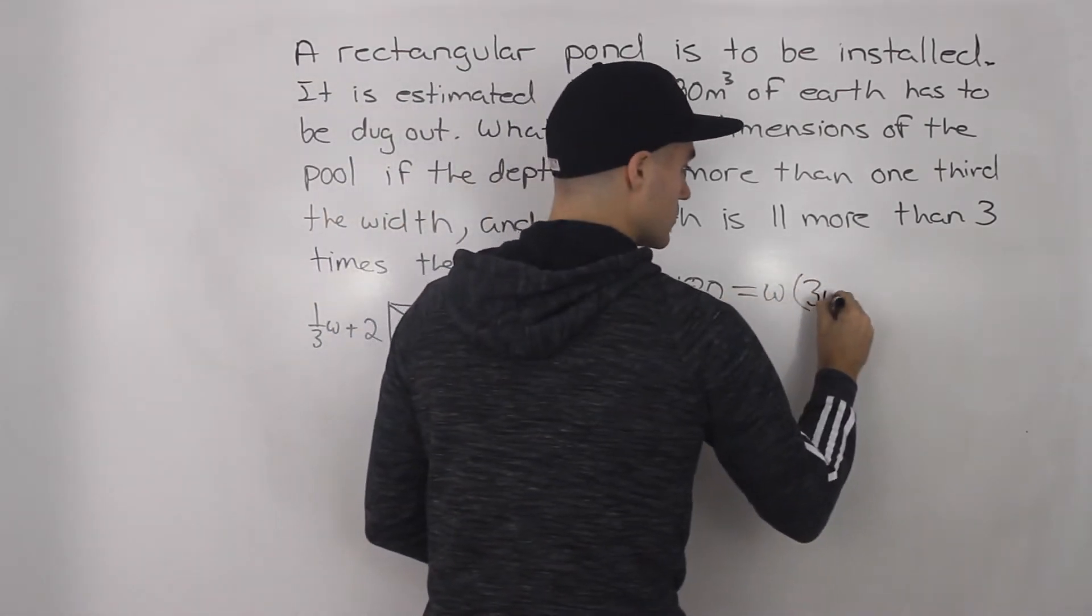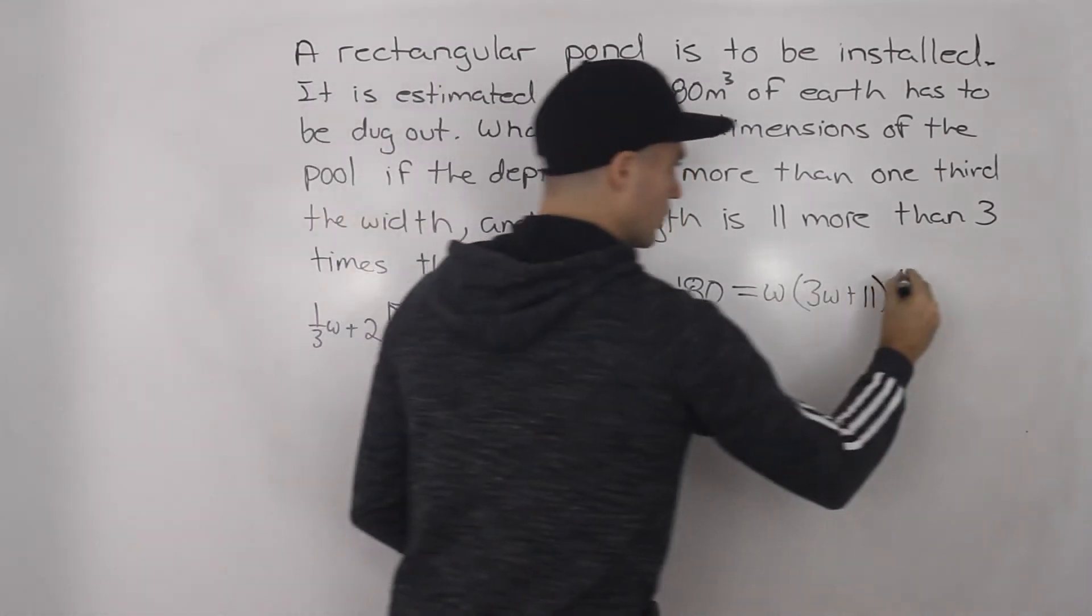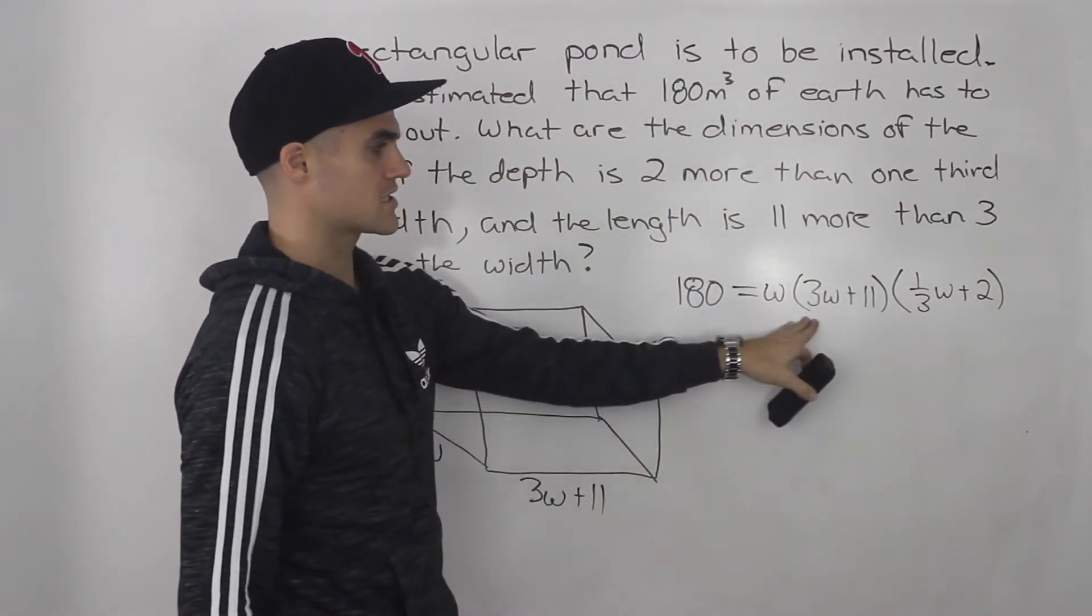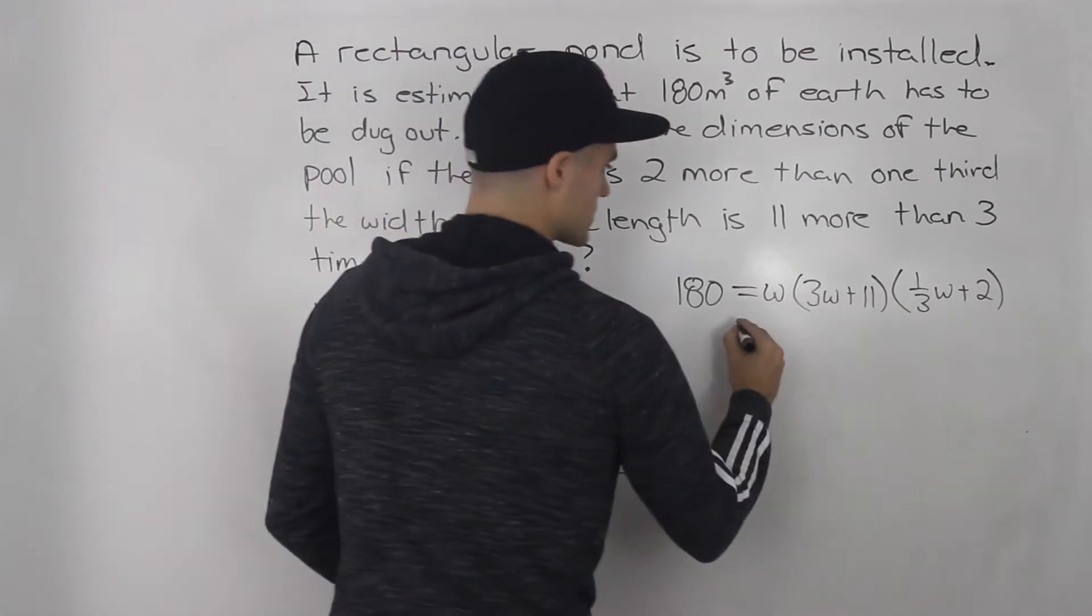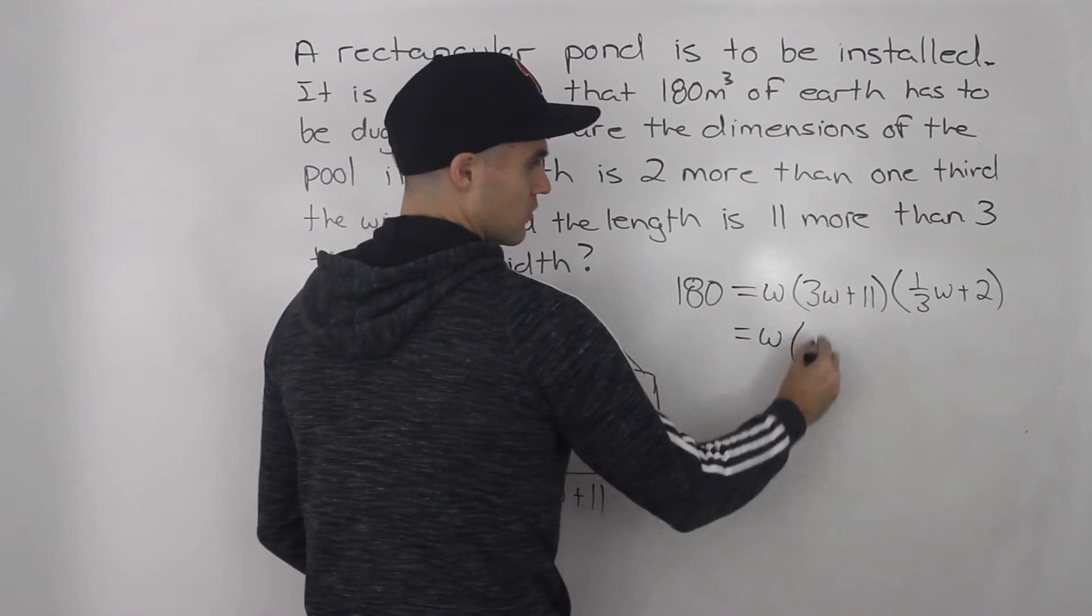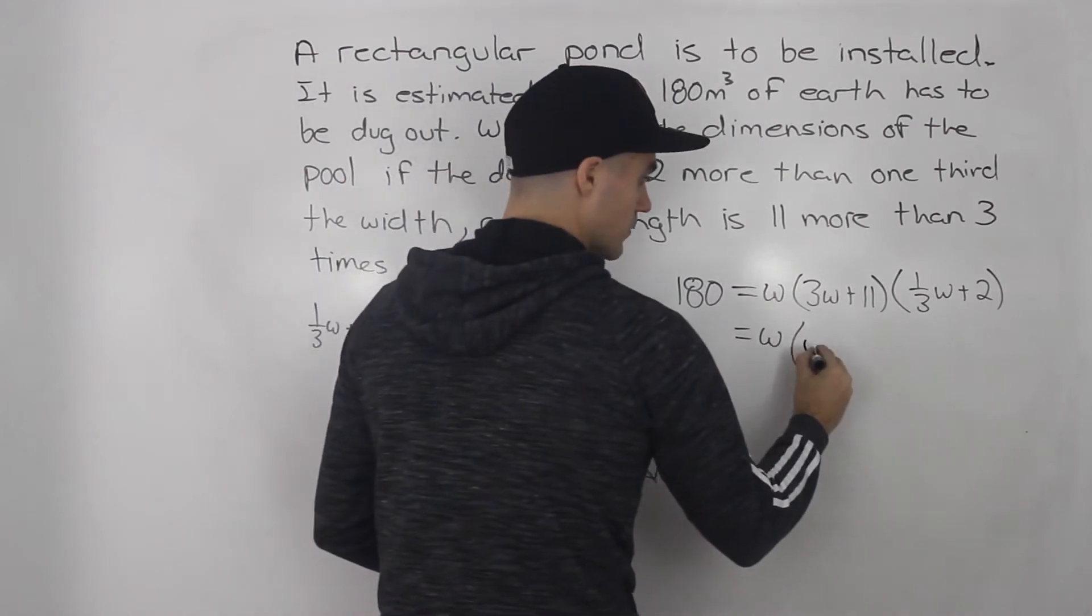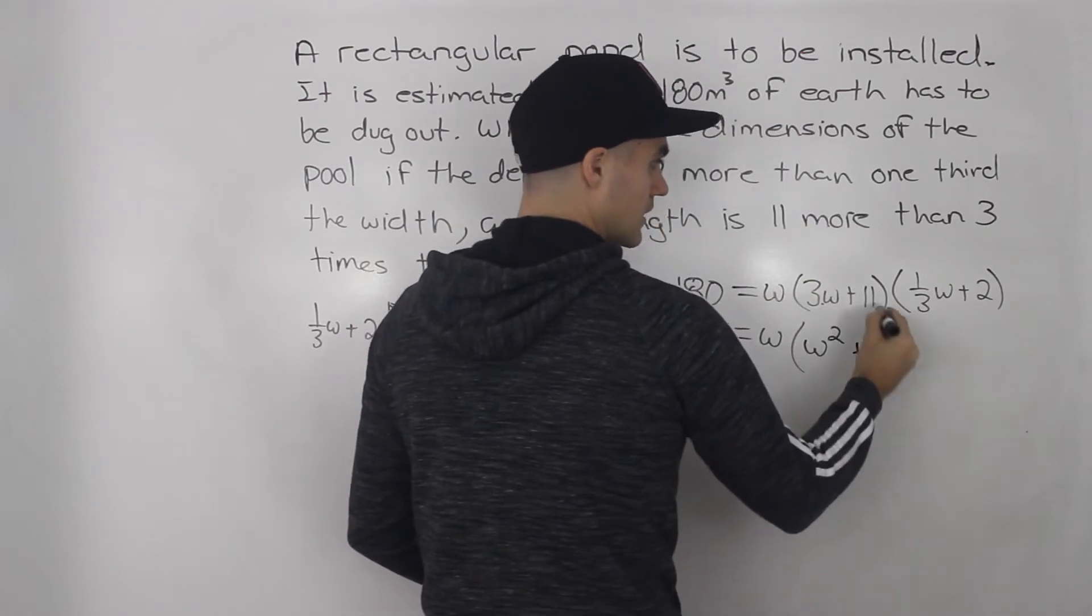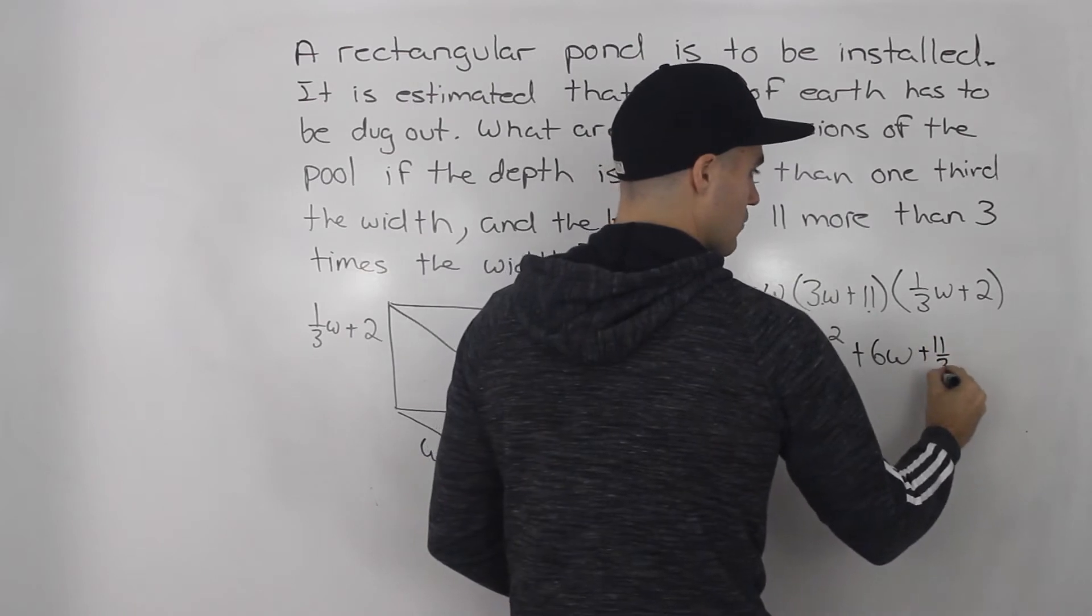Then we'll have three w plus 11, the length, and then the height will be one over three w plus two. And now what we have to do is we have to just expand that right side, bring the 180 over, and we'll have a polynomial equation. So the tricky part in this question is maybe that we're dealing with this fraction here. So three w times one over three w, three times one over three is just one, and then w times w is just w squared. Three w times two gives us six w.